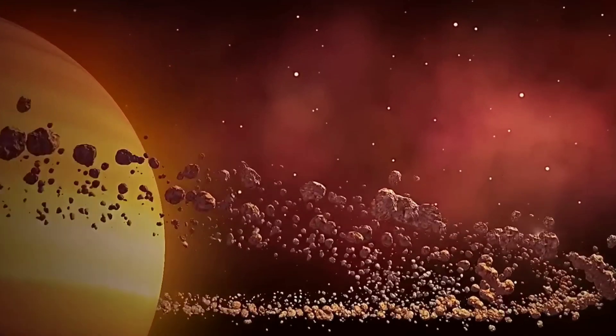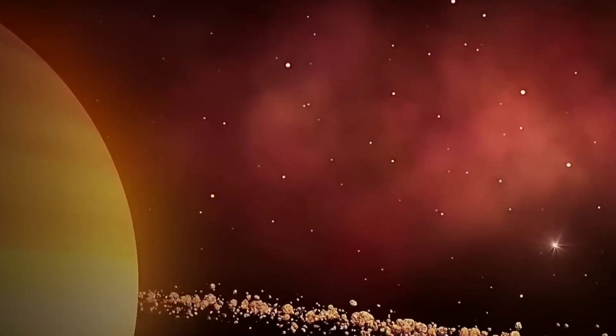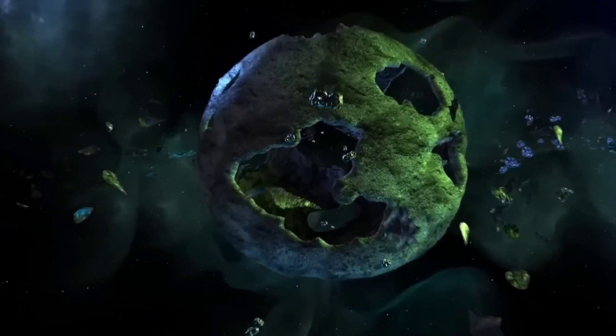Its radius is about 764 times that of the sun, meaning that if Betelgeuse were placed at the center of our solar system, it would extend beyond the orbit of Jupiter.